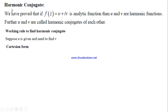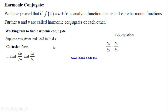Suppose we are dealing in Cartesian form and u is given as a function of x and y. We can find ∂u/∂x and ∂u/∂y, but we are interested in finding v. We take the help of the CR equations: ∂u/∂x = ∂v/∂y and ∂v/∂x = -∂u/∂y.